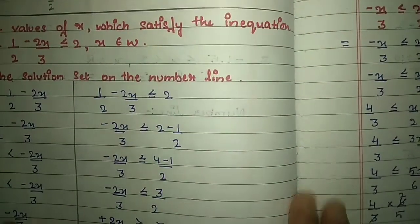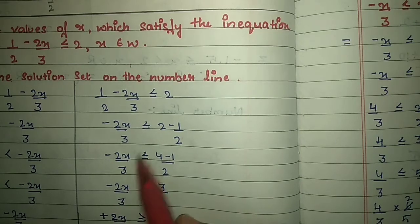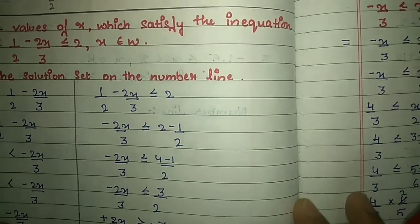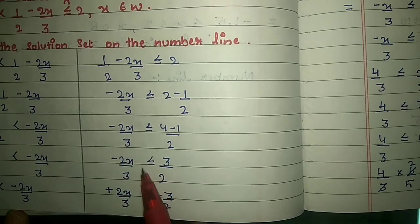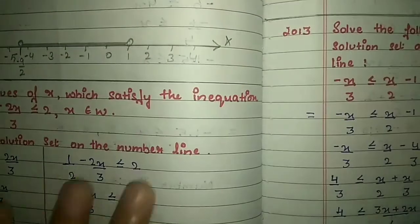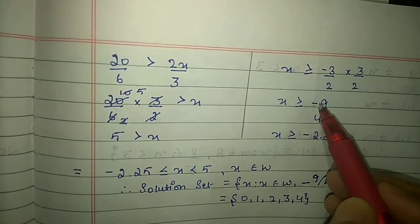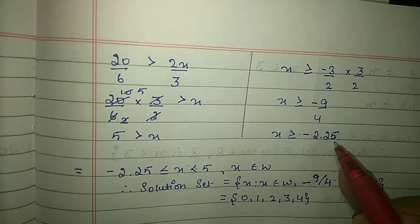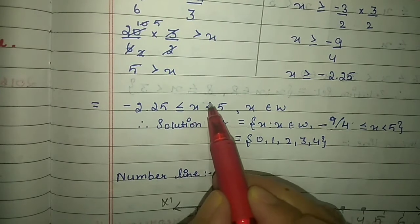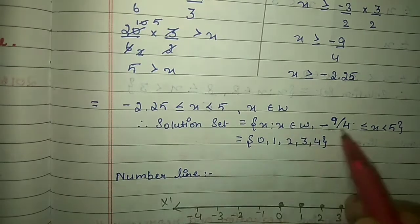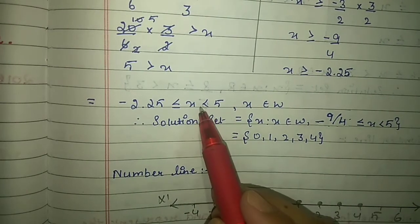Take the remaining half: 1/2 minus 2x/3 ≤ 2. Shift 1/2 to the right as minus 1/2, giving minus 2x/3 ≤ 4 minus 1/2 = 3/2. Shifting the minus reverses the symbol, giving 2x/3 ≥ minus 3/2. Multiply by 3/2: x ≥ minus 9/4, which equals minus 2.25. Joining both: minus 2.25 ≤ x < 5, x belongs to whole numbers. The whole numbers in range are 0, 1, 2, 3, 4 — we stop at 4 because the equal to symbol is not present at 5.